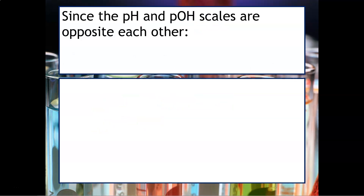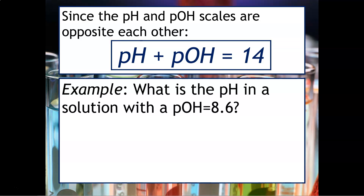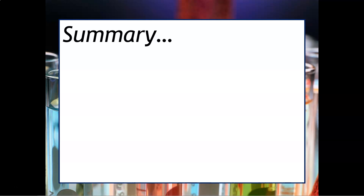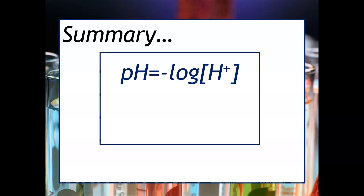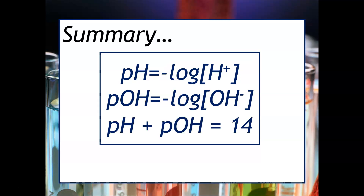Since the pH and pOH scales are opposite each other, pH plus pOH must equal 14. For example, what is the pH in a solution with a pOH of 8.6? You take pH plus 8.6 equals 14, subtract 8.6 from both sides, and get a pH of 5.4. To summarize the formulas: pH equals negative log of H plus; pOH equals negative log of OH minus concentration; and pH plus pOH equals 14.